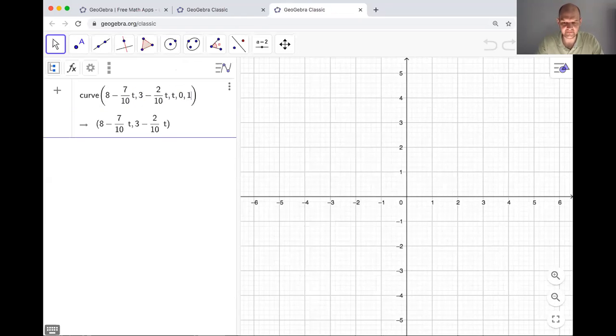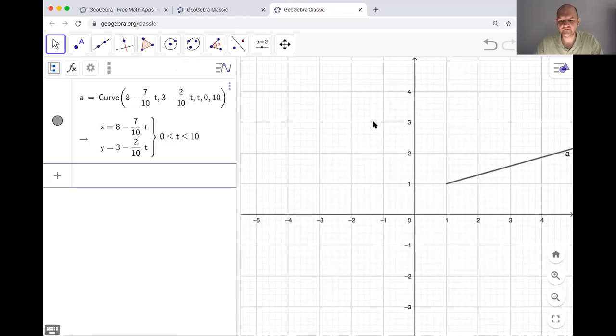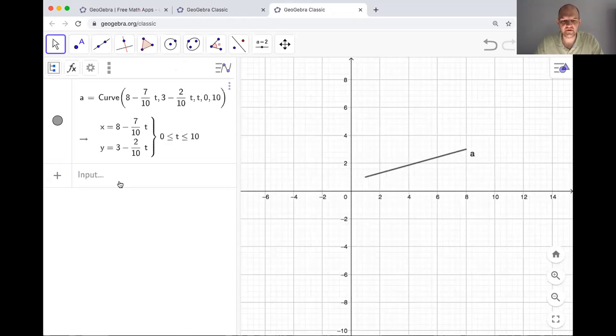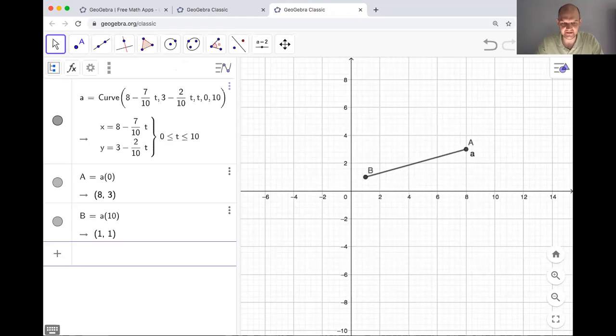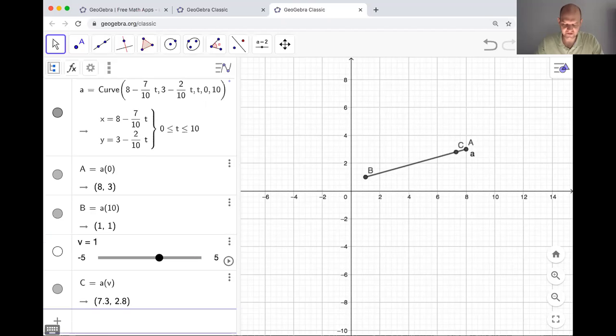We're going to do particle 1 first minus 7 over 10 T, 3 minus 2 over 10 T. T goes from 0 to 10. So we can do A of 0 and A of 10 to see if we did it right. And that is right. It's been so long since I looked at those. Then we want to put a point on here. This only goes up to 10 and the other one goes less. 10 is the maximum that we need. So we have our point and it moves. Good deal.